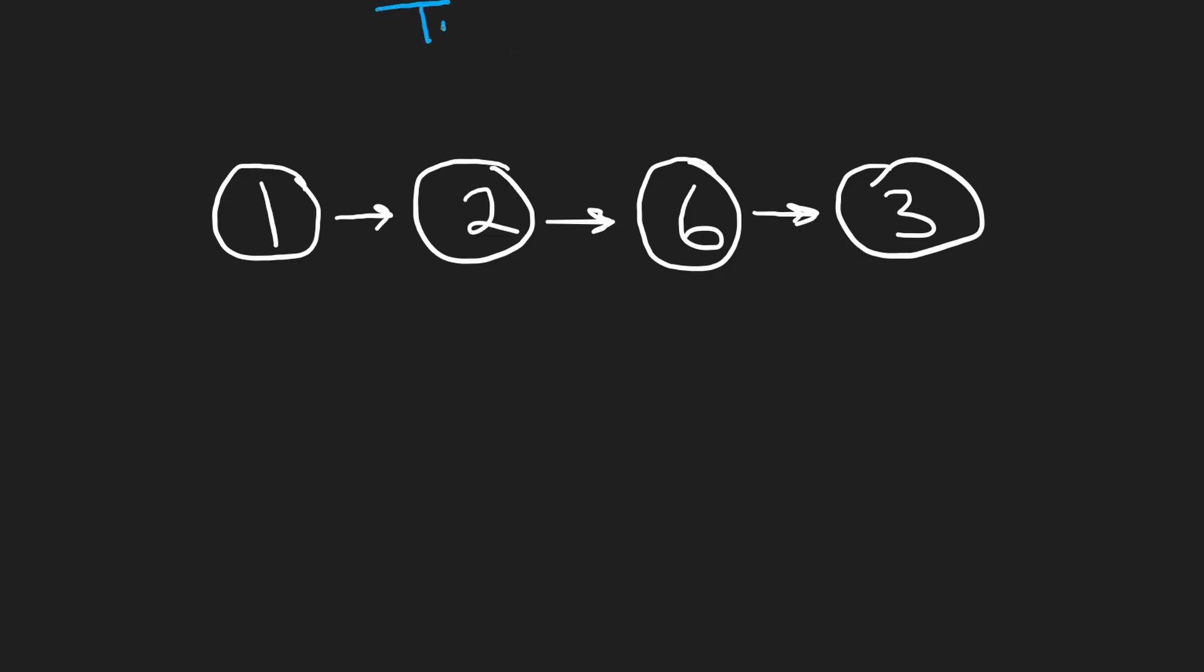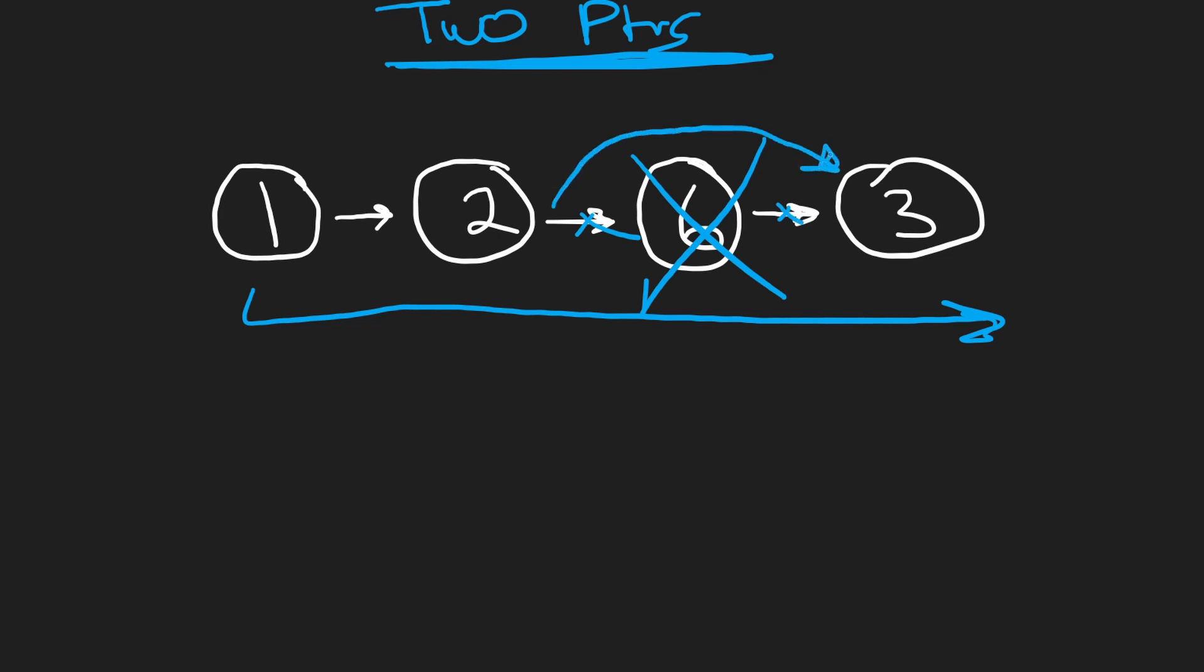So how can we actually solve this problem with an algorithm? Well, like many linked list questions, we can have multiple pointers and using these pointers, we can iterate through the list, remove the elements we want to remove, update the pointers, and then return the new head that's going to be over here.